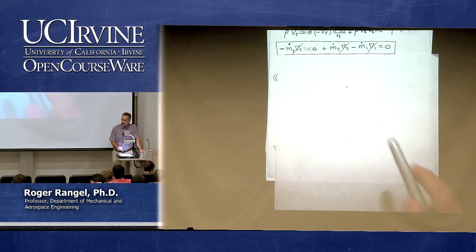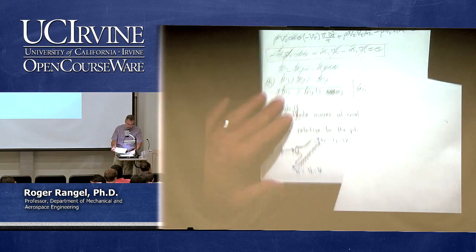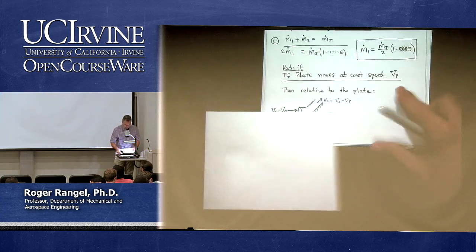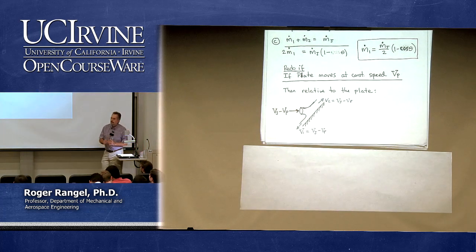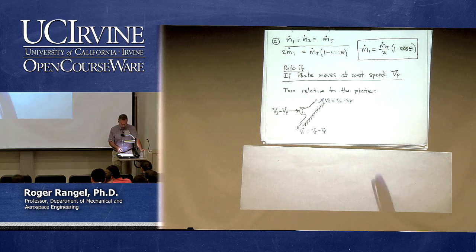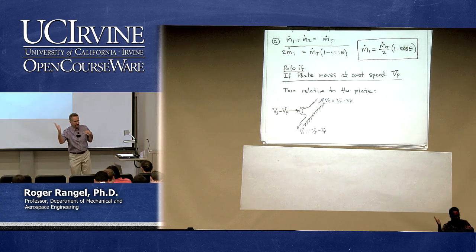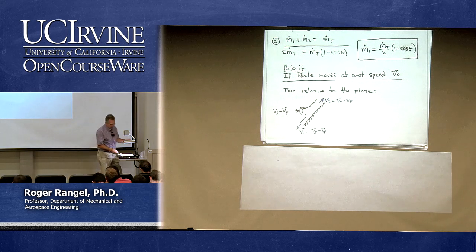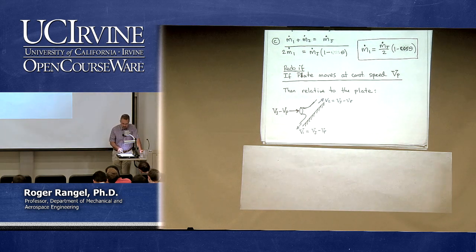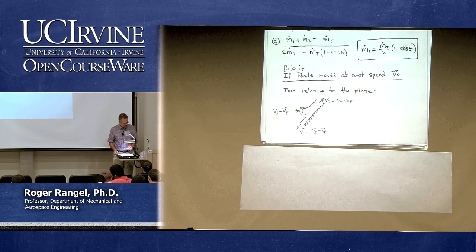This problem is in your homework and has a second part I'll leave for you to do. The second part adds a complication: do the problem again, but now the plate is moving with a constant speed — either towards or away from the jet. Consider how that changes the results if the plate is moving with constant velocity.